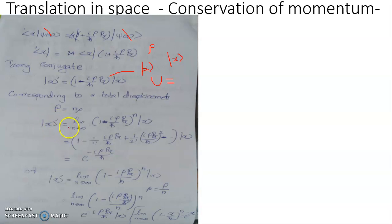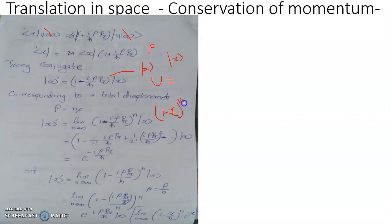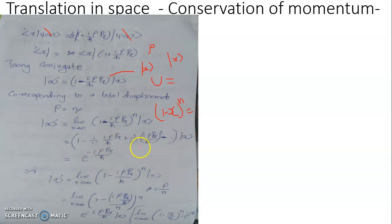Ket x' is equal to the limit as n tends to infinity of the operator (1 − iρp_x/ħ) operating n times repeatedly over ket x. This is equal to the form (1 − x)^n where x is an infinitesimally small parameter, which has a binomial expansion of the form 1 − x + x²/2! − x³/3! + etc. So accounting here, since ρ is infinitesimally small, this becomes 1 − (iρp_x/ħ) + (1/2!)(iρp_x/ħ)² + etc., which equals e raised to minus iρp_x/ħ.